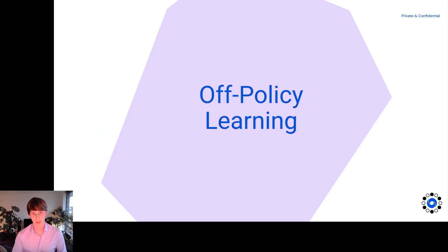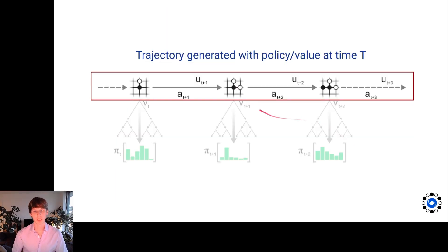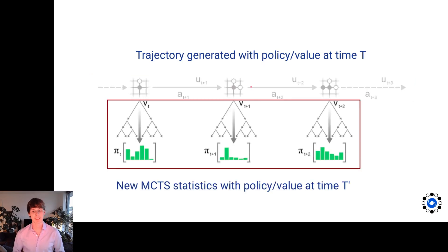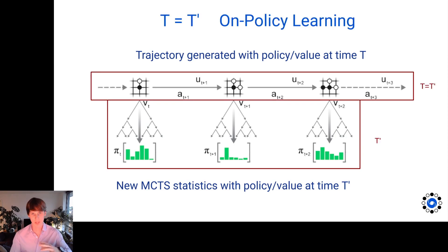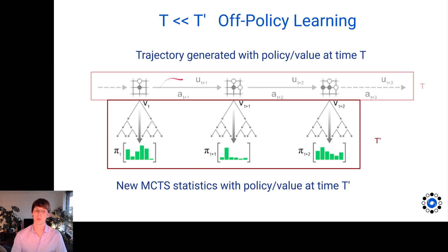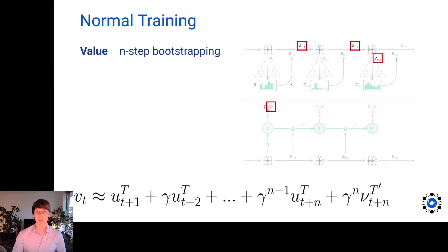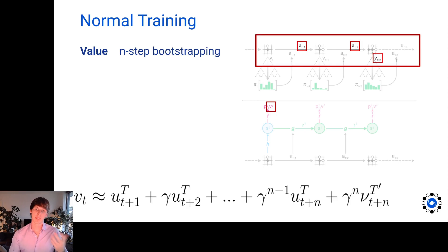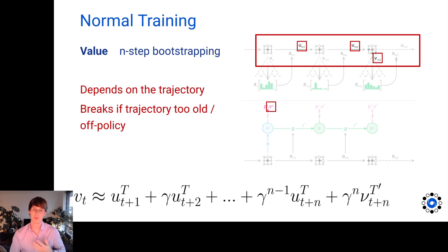A quick note on policy learning: if we reanalyze a lot, our trajectories generated at some time t may differ a lot from the MCTS statistics used as training targets. In the on-policy case this is fine, but when we are very off-policy — using old data or data from a different algorithm — our current policy may differ greatly from the policy that selected actions in the trajectory. This can be an issue when learning value by n-step bootstrapping, since the rewards along the bootstrap path were obtained under a different policy. To avoid this, we can use zero-step bootstrapping, training the value against the search value — the aggregate of all evaluations inside the search tree — which bootstraps in imagination using the learned model.